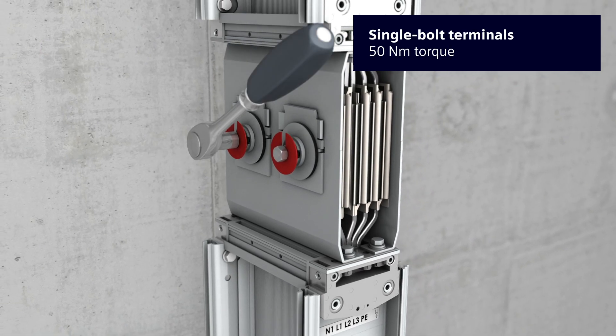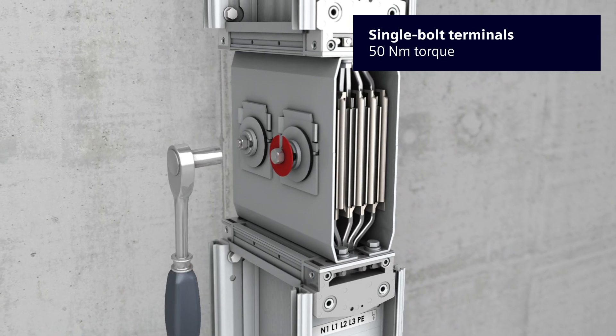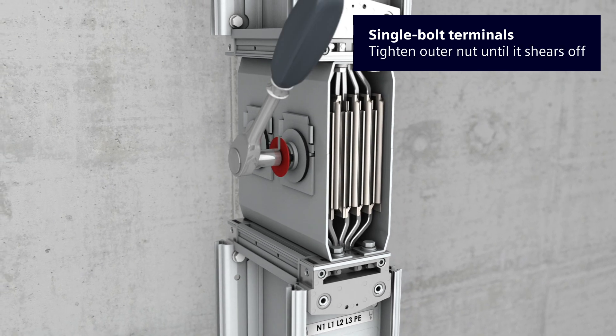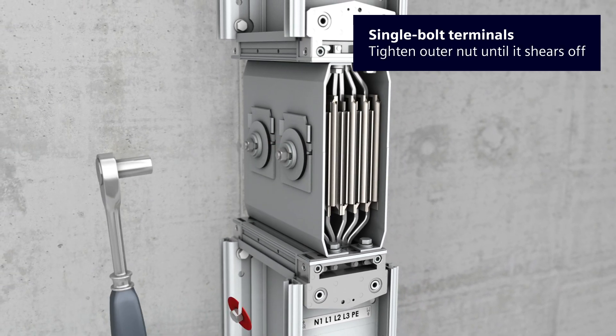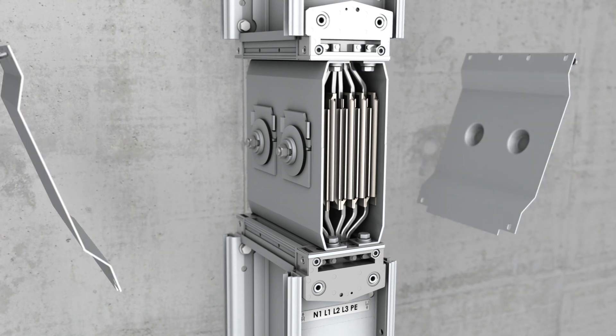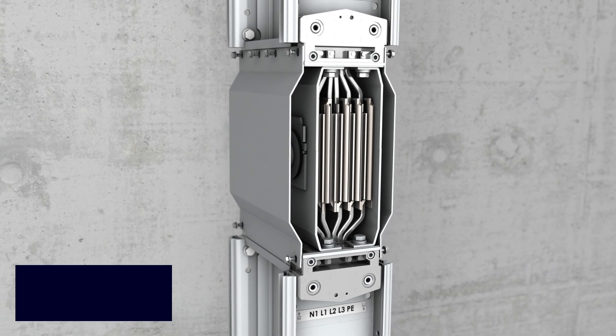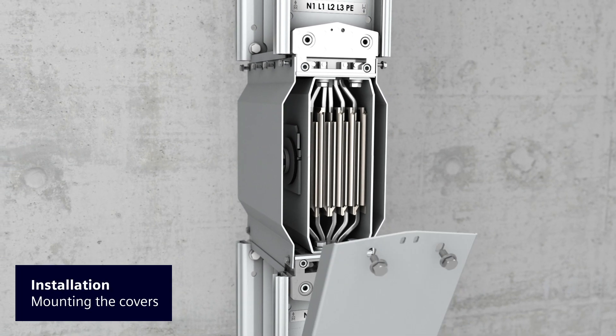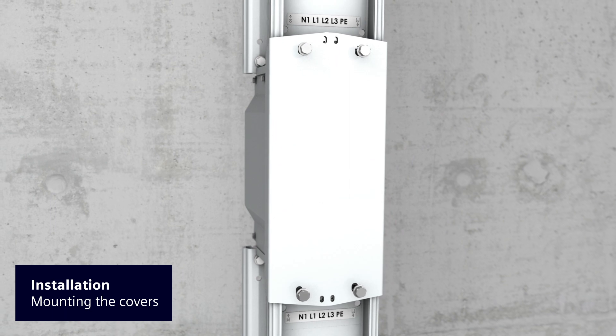During initial installation, the two single bolt terminals can also be tightened without a torque key. Tighten the outer part of the double-headed nut until shearing off. That will represent a torque of 50 Nm. Mounting the covers will complete the installation of the maintenance-free bus bar connection.